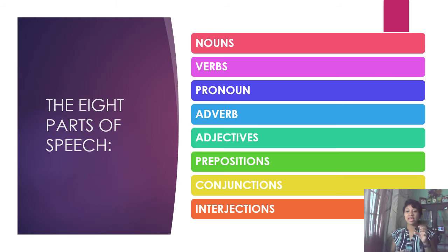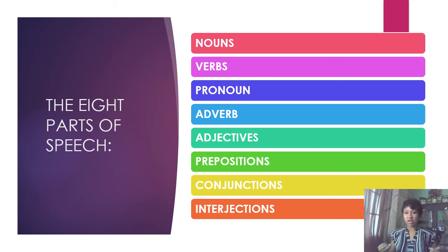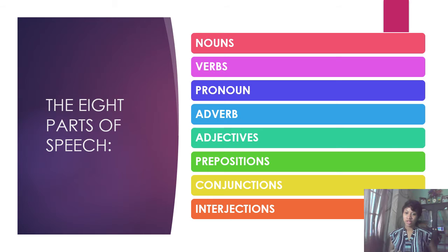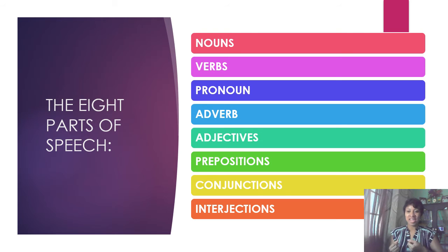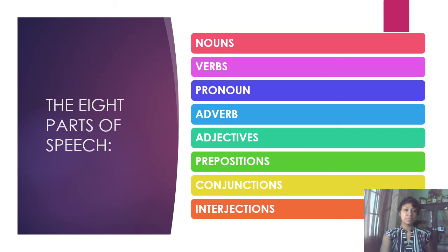Lastly, we have our eighth part of speech — the interjection. When you hear the word 'interjection,' it is where emphasis is placed on a thought, a word, or an idea. You've heard of exclamation marks. So you exclaim: 'Wow, that is beautiful!' — 'wow' holds the position of the interjection because that's where the emphasis is placed.